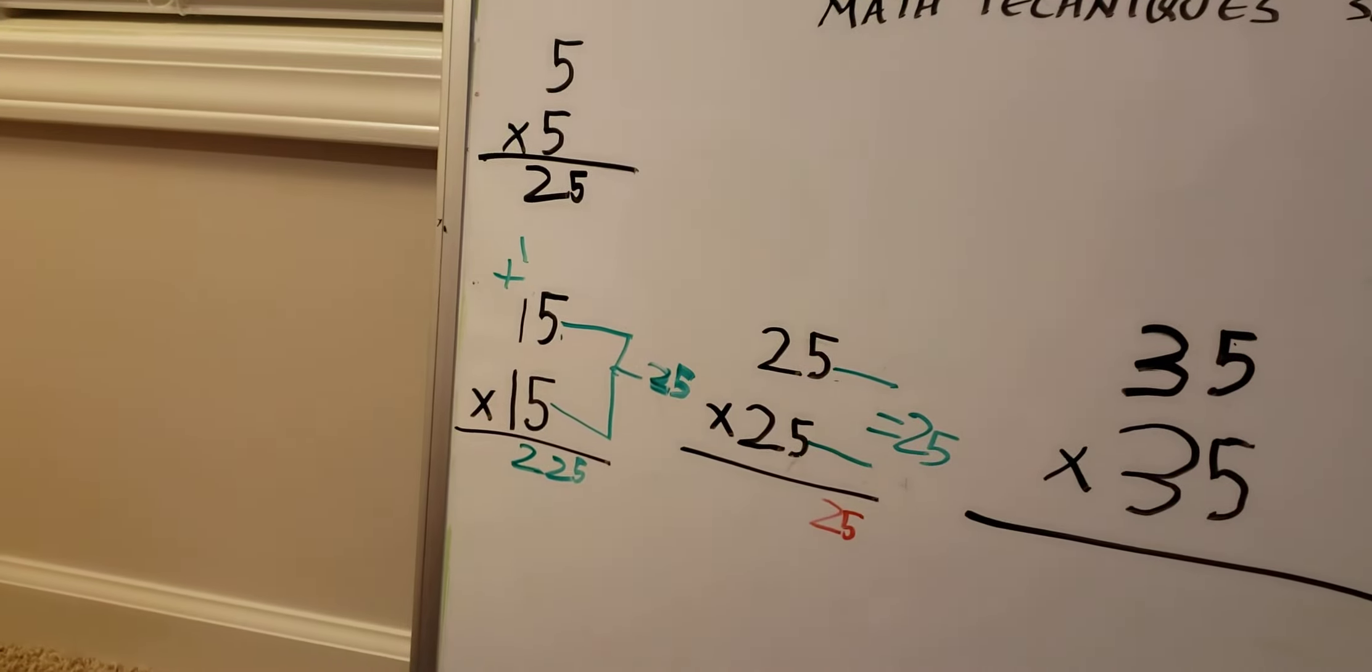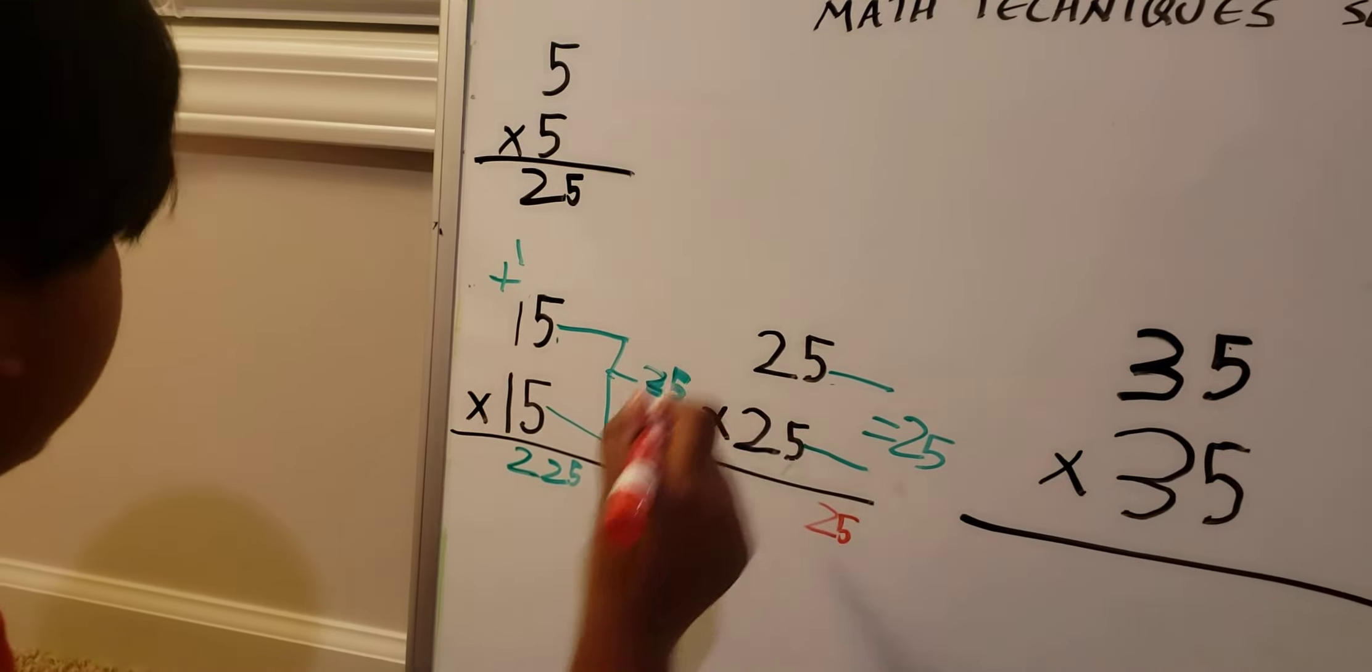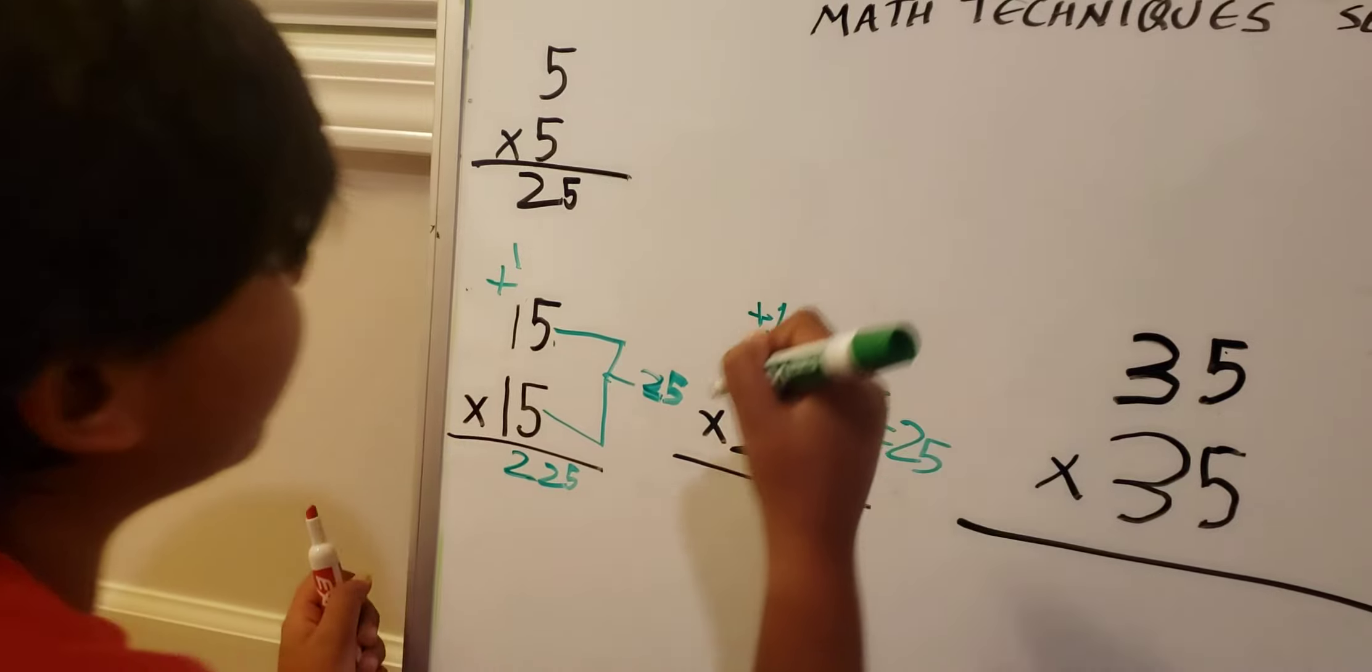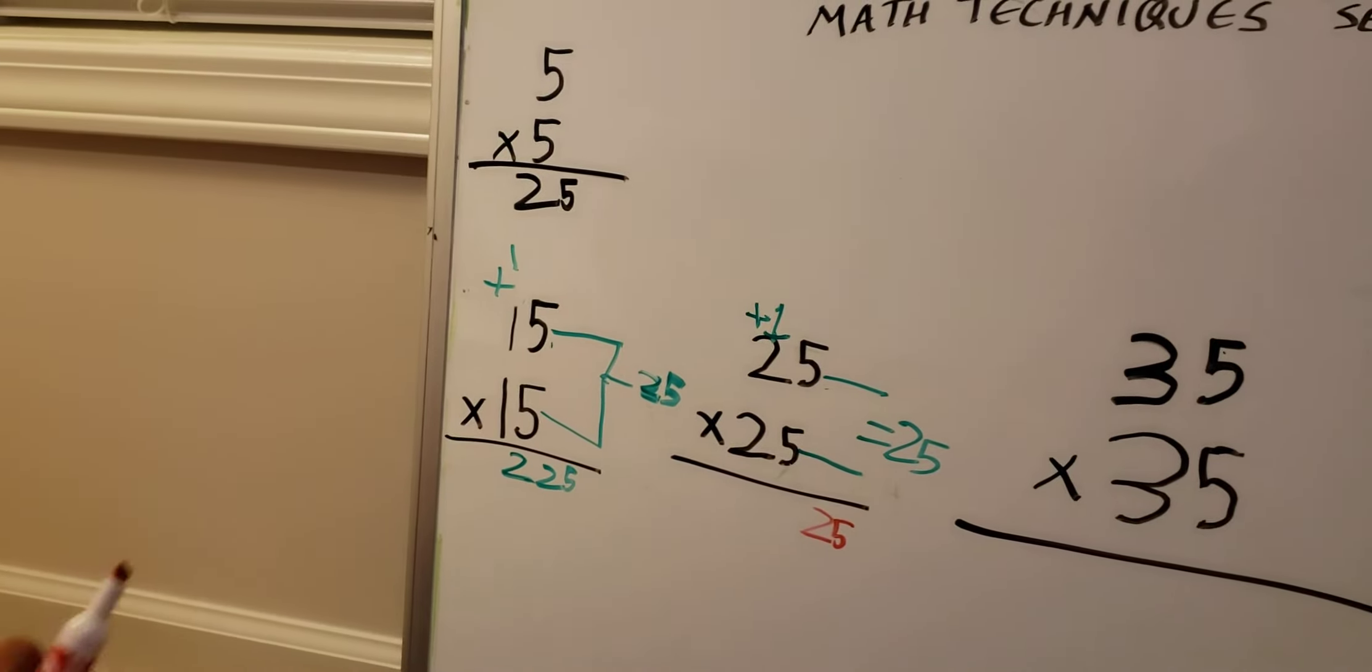And then just magically add one, so that's 3 times 2, so you have to put a 6.